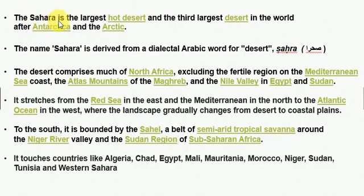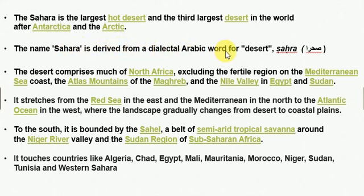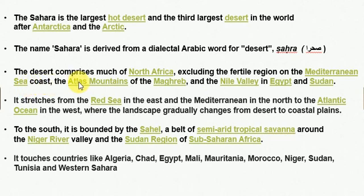The Sahara is the largest hot desert and the third largest desert in the world after Antarctica and Arctic. The name Sahara is derived from a dialectal Arabic word for desert. The desert comprises much of North Africa, excluding the fertile regions on the Mediterranean Sea coast, the Atlas Mountains of the Maghreb, and the Nile Valley in Egypt and Sudan.